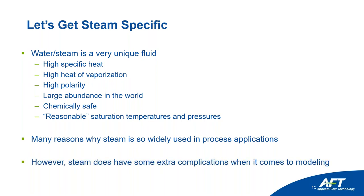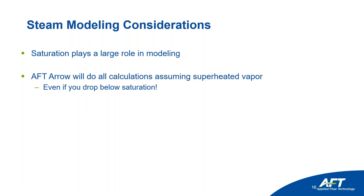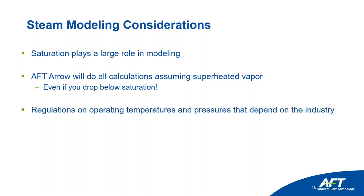However, steam has some extra complications when it comes to modeling. We have to pay attention to saturation — because those saturation conditions are reasonably approachable, we have to worry about steam condensing out in our piping systems. Aero will do all calculations assuming it's a superheated vapor — even if you drop below saturation conditions, it will still solve as if it were a gas, extrapolating data from a gaseous state. Aero will warn you that saturation is occurring depending on the database you use. You don't have to worry about this with air or oxygen, not usually unless you're in cryogenics.